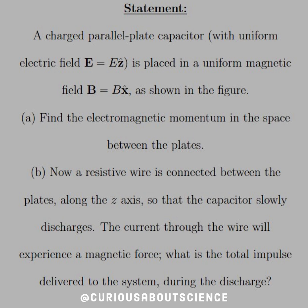Part B: Now a resistive wire is connected between the plates along the z-axis so that the capacitor slowly discharges. The current through the wire will experience a magnetic force. What is the total impulse delivered to the system during the discharge?